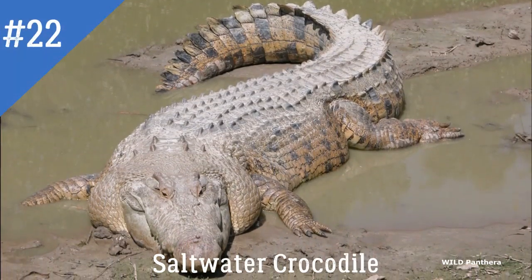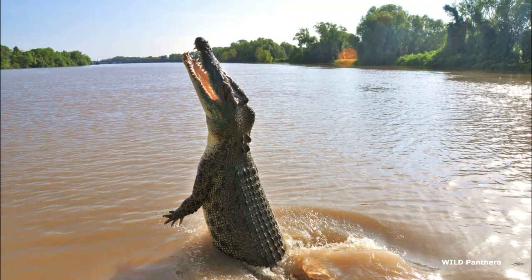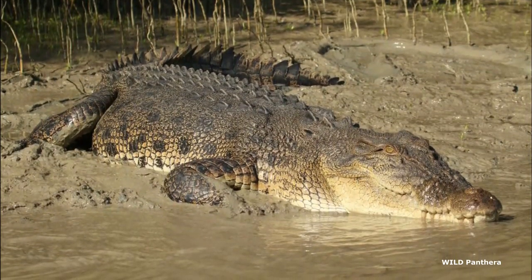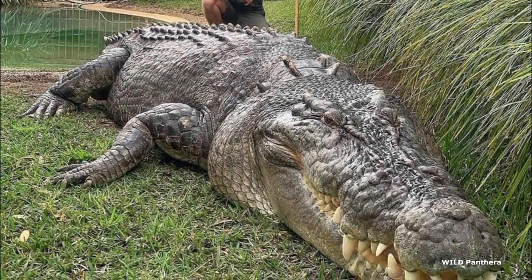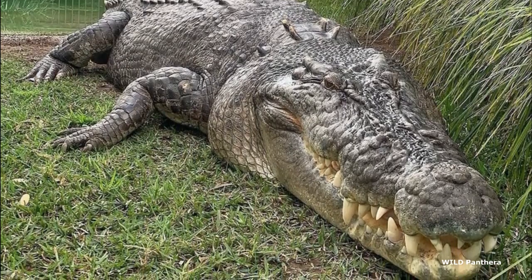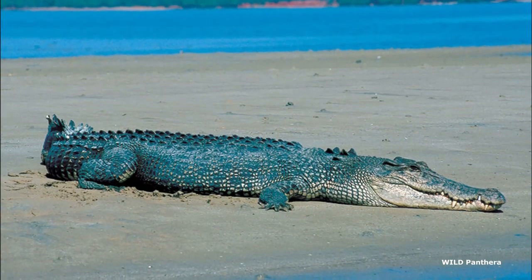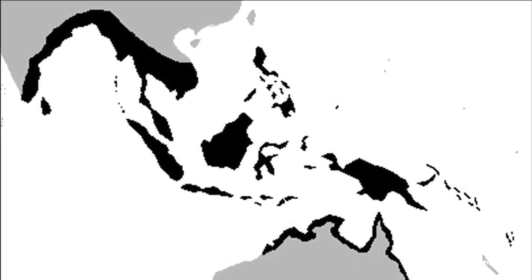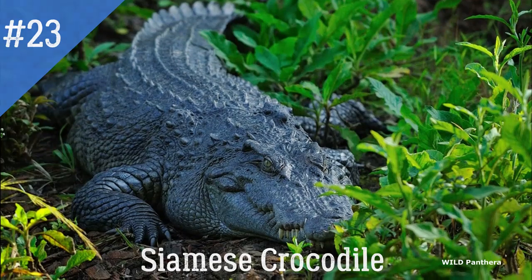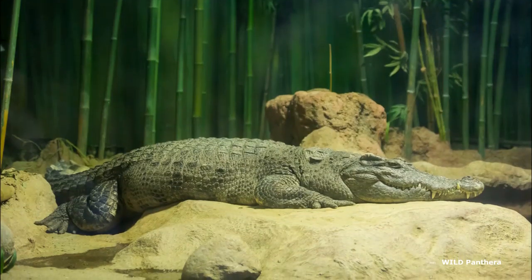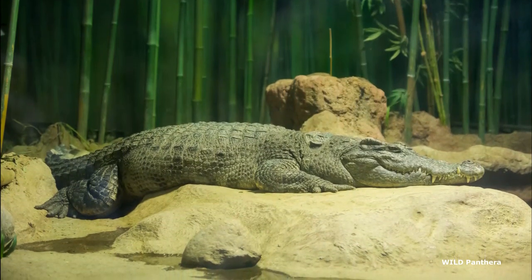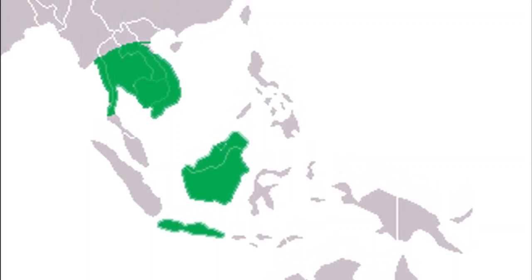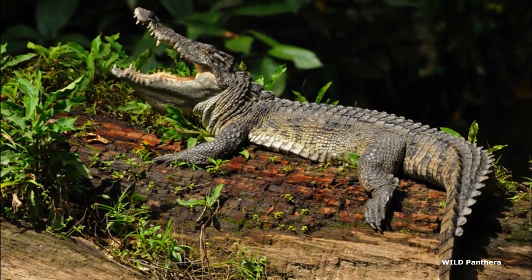21. Saltwater Crocodile — Crocodylus porosus is the largest living reptile and most aggressive of all crocodile species. It is a big-headed species with a relatively broad snout. They live in brackish and marine environments as well as in the lower stretches of rivers in Australia and Southeast Asia. 22. Siamese Crocodile — Crocodylus siamensis is a small crocodile species that prefers freshwater habitats. It is found in Indonesia, Brunei, East Malaysia, and southern Indochina, and is listed as critically endangered.